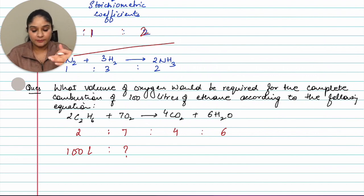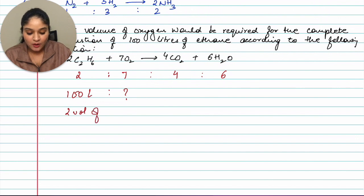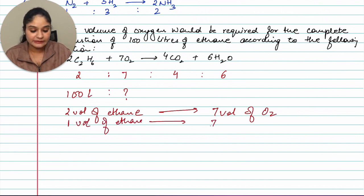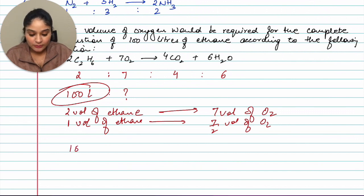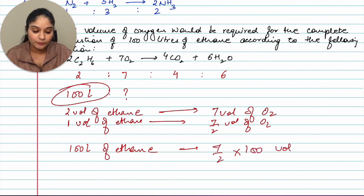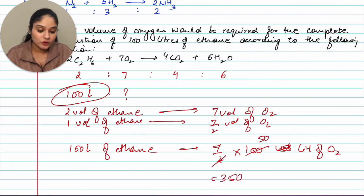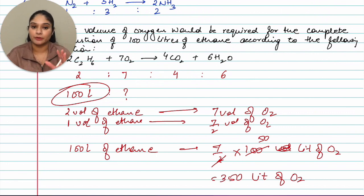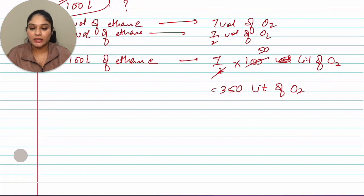Two volumes of ethane requires seven volumes of oxygen, so one volume of ethane requires 7/2 volumes of oxygen. They have given 100 liters of ethane, so 100 liters of ethane requires (7/2) × 100 liters of oxygen. Solving this gives 350 liters — so 350 liters of oxygen is required to burn 100 liters of ethane.